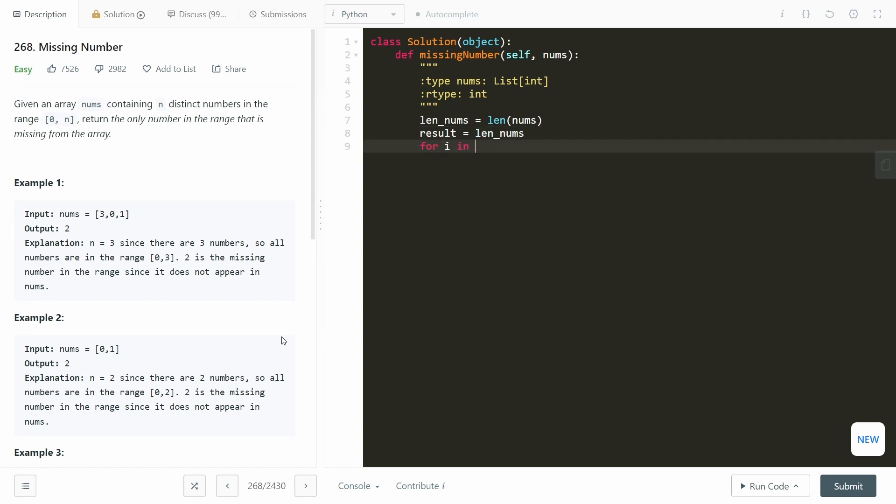Now for I in range length of nums, result XOR equals I and result XOR equals nums at I. And we just return result. And that's all there is to it.